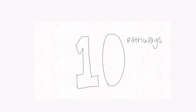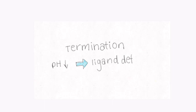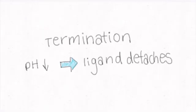There are 10 different PDGF signaling pathways which lead to cell growth and repair. When the cell's pH decreases to a certain level, the receptor releases the signaling molecule, terminating the pathway.